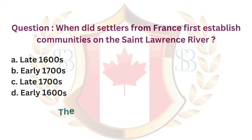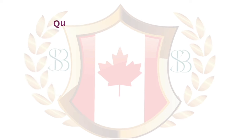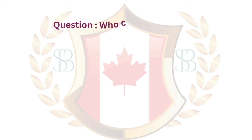Question. When did settlers from France first establish communities on the St. Lawrence River? a. Late 1600s. b. Early 1700s. c. Late 1700s. d. Early 1600s. The answer is d. Early 1600s.